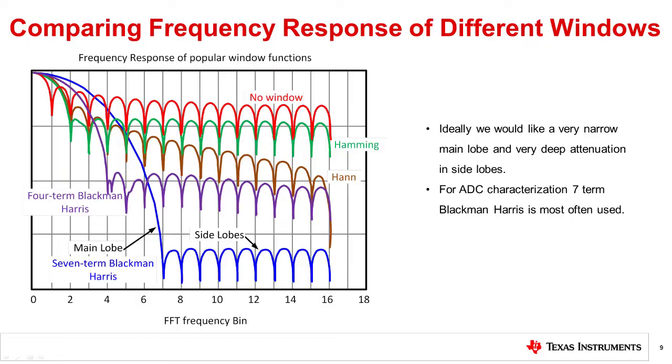The window has a frequency response and function like a bandpass filter. The main lobe in the frequency domain window passes the fundamental and the side lobes attenuate the spectral leakage. This graph shows the frequency response for several different filters.